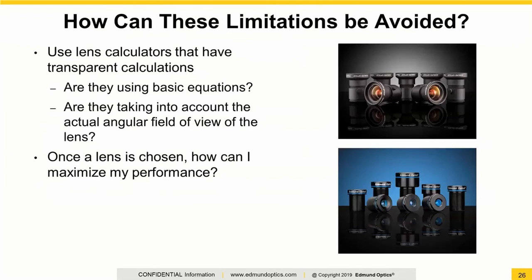The other things you want to think about when looking at lens calculators: are they using basic equations or not? For things that are very far away and looking at small fields of view, the basic equations hold pretty well. When you start getting up close, as is the case in many machine vision applications, that can be a little bit difficult. Are they taking into account only the angular field of view from the front surface of the lens, or are they taking into account the actual design parameters? As you change working distances, the angular fields of view can actually change slightly, which will affect the calculations.